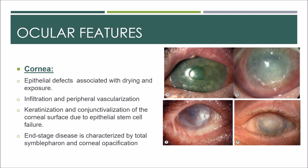Ocular features in the cornea are also very debilitating. Epithelial defects are associated with drying and exposure. There is infiltration and peripheral vascularization. Keratinization and conjunctivalization of the corneal surface occur due to epithelial stem cell failure. End-stage disease is characterized by total symblepharon and corneal opacification — the cornea is completely opaque.